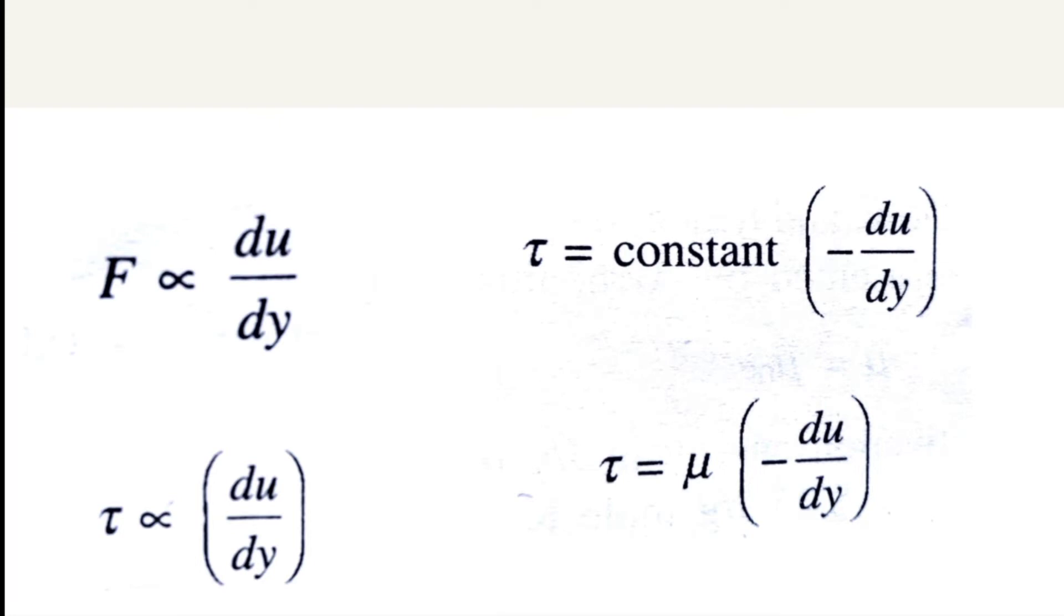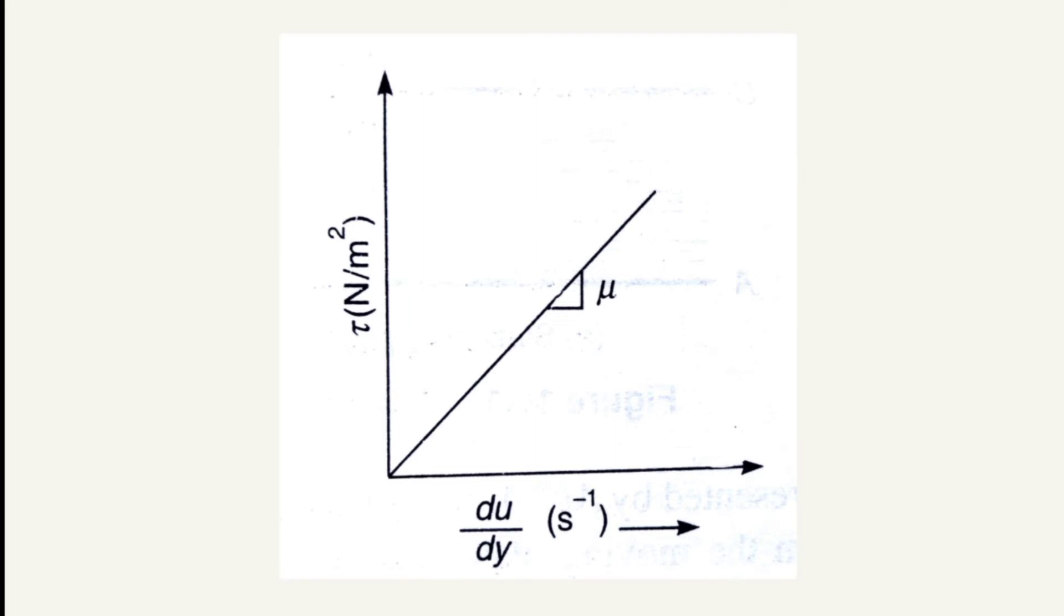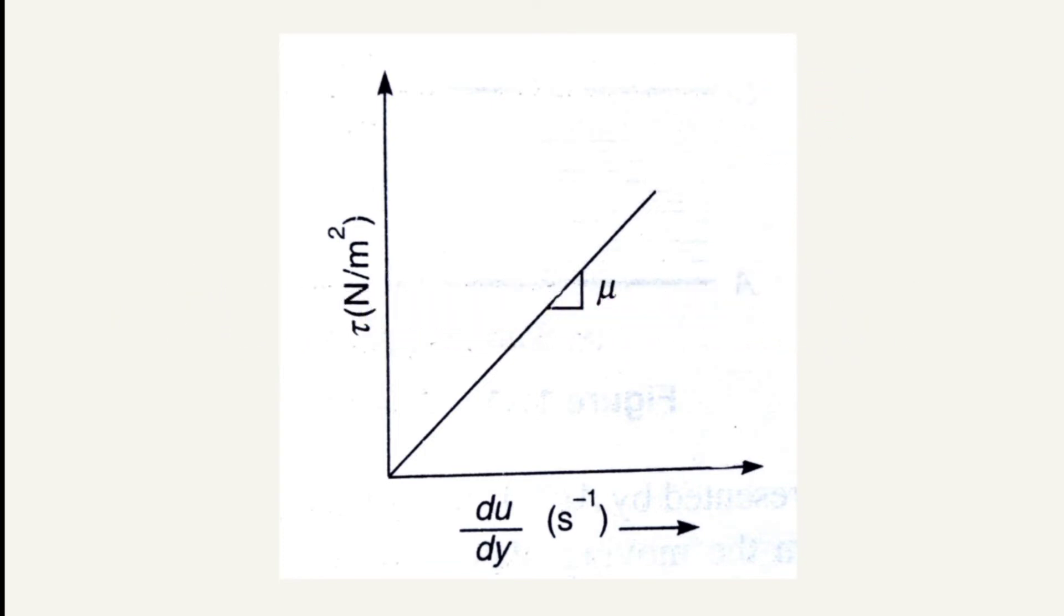This proportionality relationship between tau and dU/dY is known as Newton's law of viscosity. Newton's law of viscosity can be represented graphically by plotting a graph between shear stress tau on y-axis and shear strain dU/dY on x-axis. It results in the formation of a straight line passing through the origin. So all the fluids that obey Newton's law of viscosity and show a linear relationship between shear stress and shear strain are known as Newtonian fluids. Fluids like water, milk, honey, coconut oil, glycerol, etc. are all Newtonian fluids.